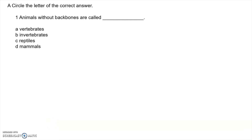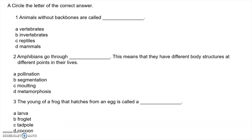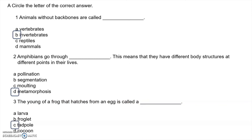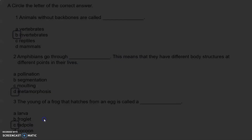Now open your book to page 105 for the practice activity. Circle the letter of the correct answer. Number one: animals without backbones are called invertebrates. Number two: amphibians go through metamorphosis — this means they have different body structures at different points in their lives. Number three: the young of a frog that hatches from an egg is called a tadpole.